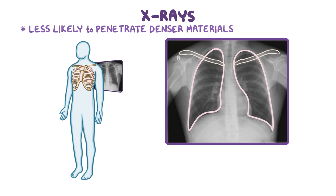Let's go through this chest x-ray using an easy-to-remember checklist associated with the first seven letters of the alphabet: A, B, C, D, E, F, G.